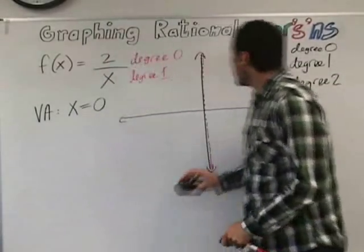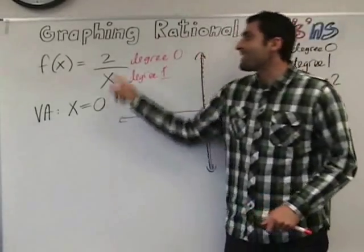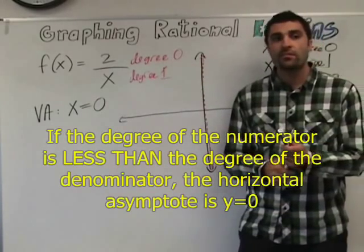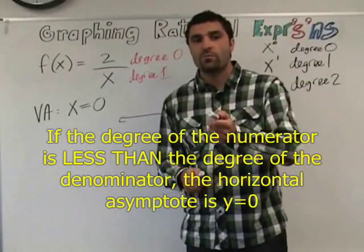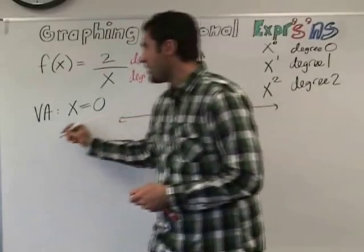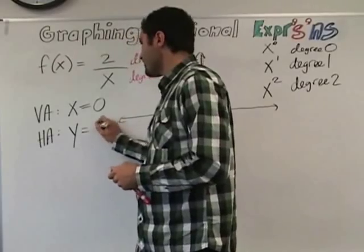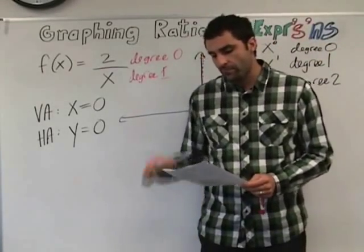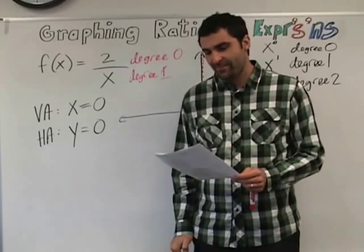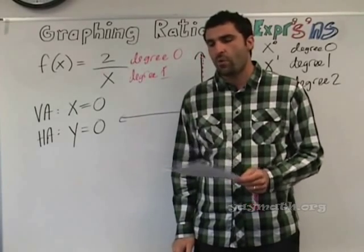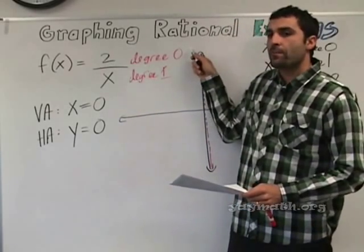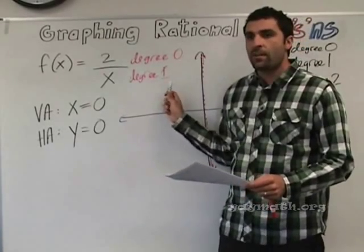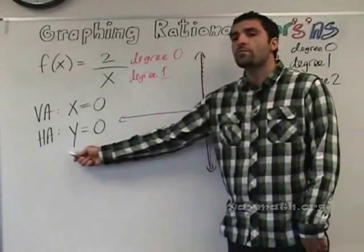If the degree of the numerator is less than the degree of the denominator, what is the horizontal asymptote according to your paper? Y equals 0. So: degree of the numerator is 0, degree of the denominator is 1 — the numerator's degree is less than the denominator's, therefore the horizontal asymptote is y equals 0.